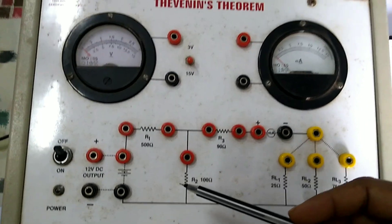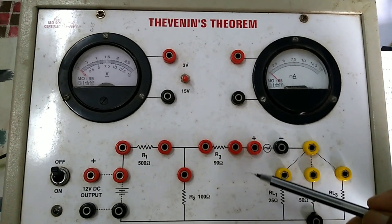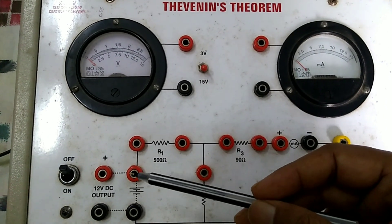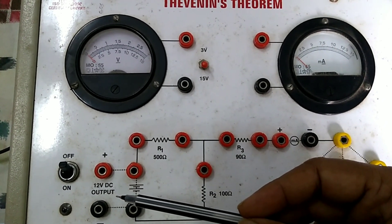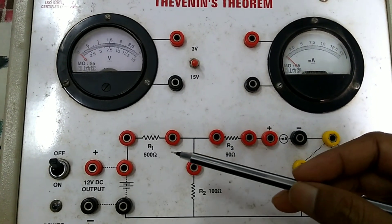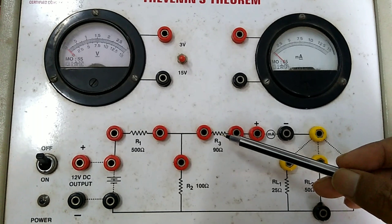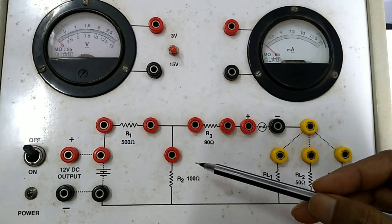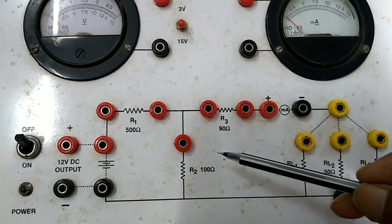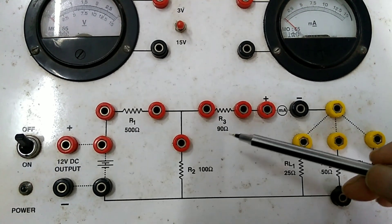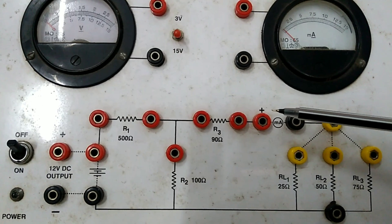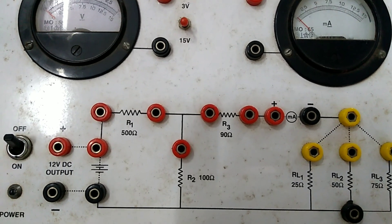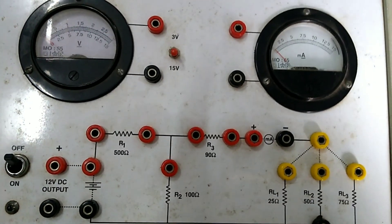Experiment on Thevenin's theorem. According to Thevenin's theorem, if you have a linear circuit containing voltage source and resistances, a linear circuit having voltage source, current source, and resistances can be replaced by an equivalent circuit containing an equivalent voltage source called Thevenin voltage and an equivalent resistance called Thevenin resistance.